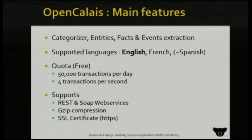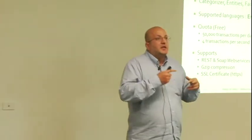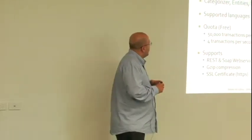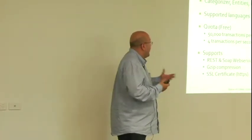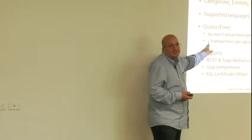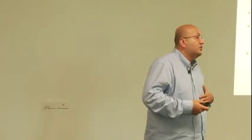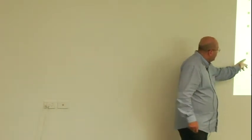If you want to go deep into detail, Open Calais is a good choice. They support different languages — English is very well supported, French is okay, and they also say they have Spanish, but Spanish is not reliable; I tried it and they haven't achieved a good level with that language yet. They have a quota: 50,000 transactions per day for free. If you need more, you can contact them and they can configure your account to remove the limits.